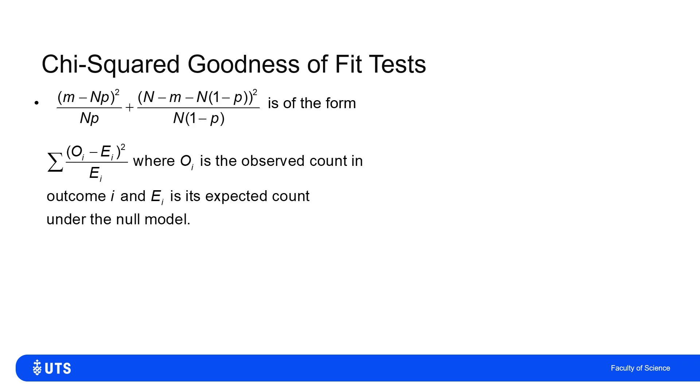The next question being, why would I wish to write it in that form? That's because both terms are of this same form of what did I observe: I observed m heads. How many heads did I expect under this hypothesis? np. And I square how many more or less I observed than expected of heads divided by np, which is how many heads I expected.